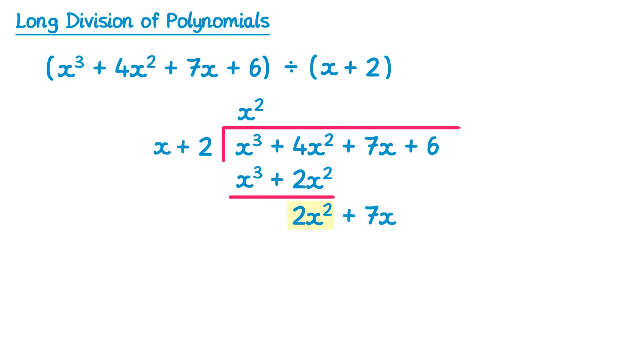So now we're going to do this 2x squared here divide by the first part of this linear term, x. 2x squared divided by x gives you 2x, so plus 2x. Then we multiply back through, so this 2x times the whole linear term. 2x times x is 2x squared, and then 2x times 2 is plus 4x. And then we do a subtraction. So 2x squared plus 7x take away 2x squared plus 4x. The 2x squared will cancel, and then 7x take 4x is 3x. And then we bring down the next term, so in this case it's the plus 6.